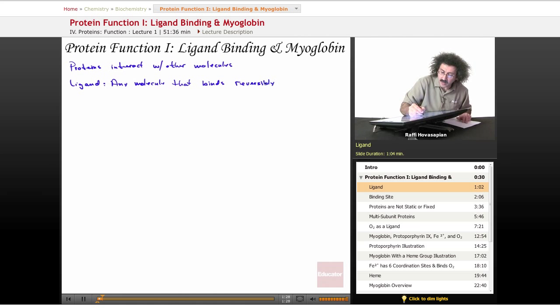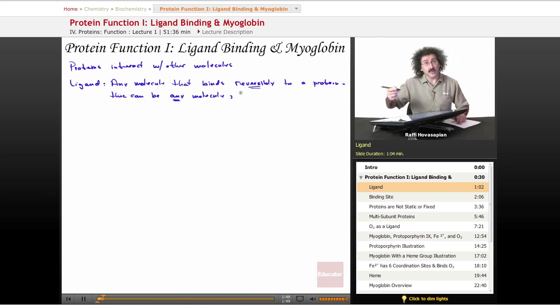That binds reversibly to a protein. Now, this can be any molecule, even another protein. That's it. So a ligand is any molecule that binds reversibly to a protein.